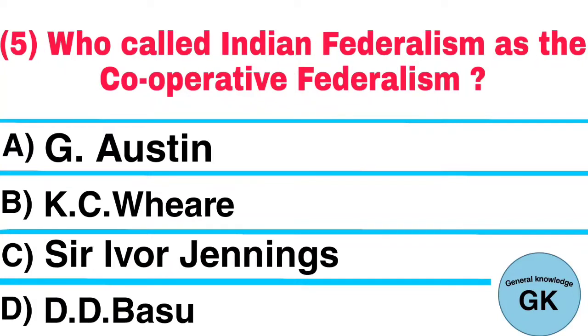Question number 5. Who called Indian federalism as the cooperative federalism? A. G. Austin, B. Casey Ware, C. Siriva Jennings, D. D.D. Basu. Answer: G. Austin.